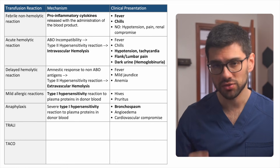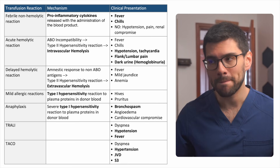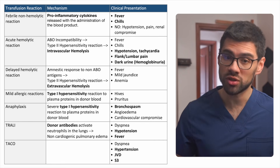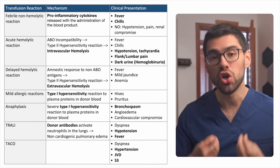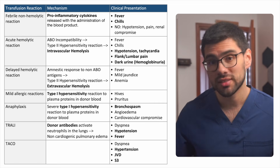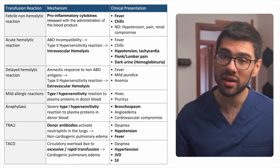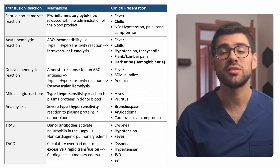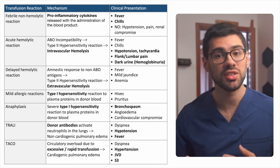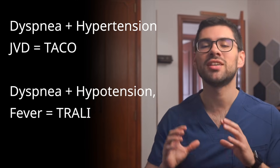Now let's compare the final two complications: TRALI and TACO. Apart from their complicated names, they both cause dyspnea and pulmonary edema, but for completely different reasons. TRALI is an inflammatory condition caused by donor antibodies in the transfused product that activate neutrophils in the lungs, leading to non-cardiogenic pulmonary edema. It presents with respiratory distress plus systemic inflammatory signs like hypertension and fever. TACO, as the name suggests, is all about volume — there's simply too much blood and the heart cannot handle the volume, leading to cardiogenic pulmonary edema. Patients also present with dyspnea, but with congestive signs like hypertension, JVD, and an S3 gallop. So: dyspnea plus hypertension and JVD is TACO, and dyspnea plus hypertension and fever is TRALI.